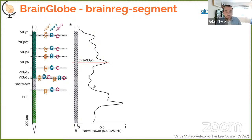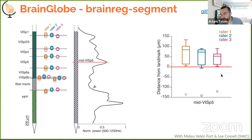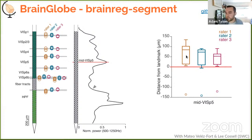We validated anatomical segmentation multimodally by comparing it to electrophysiological data. Measuring LFP power along the probe as it descends through cortex and hippocampus, there is an increase at the hippocampal entry and a peak in the middle of layer 5. Across three raters we get an average discrepancy of about 60 microns between the electrophysiological and anatomical landmarks. There is a slight systematic bias toward underestimating probe length, likely because DiI labeling is hard to pick up at the exact probe tip.